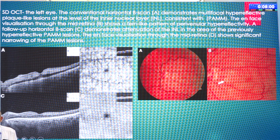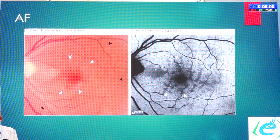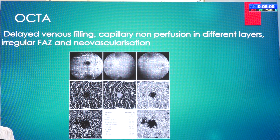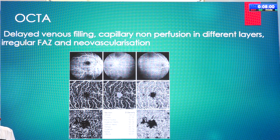These are important OCT findings. Autofluorescence also sometimes shows fern-like hypofluorescence in CRVO cases. OCTA shows us vascular abnormalities in any layer of the retina, including venous filling defect delays, capillary non-perfusion in different layers, irregular foveal avascular zone, and neovascularizations.